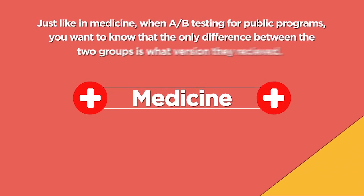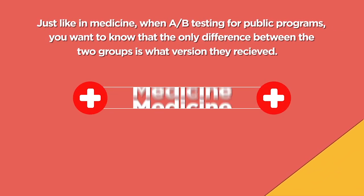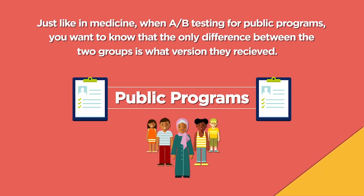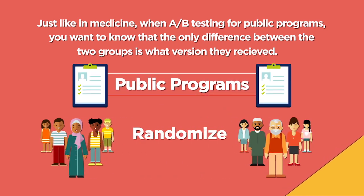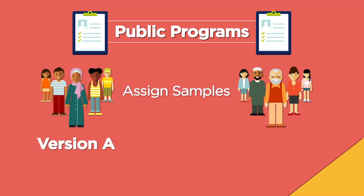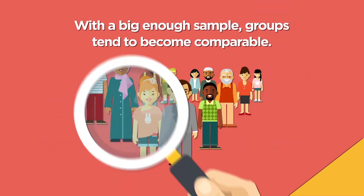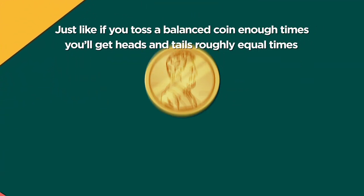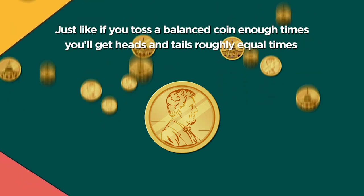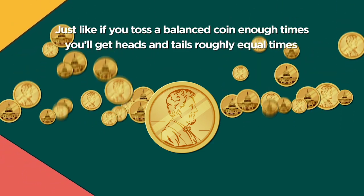Just like in medicine, when A-B testing for public programs, to be confident in the results, you want to know that the only difference between the two groups is what version they received. The best way to do that is to assign your sample into version A and version B completely randomly. With a big enough sample, groups tend to become comparable — just like if you toss a balanced coin enough times, you'll get heads and tails roughly an equal number of times.